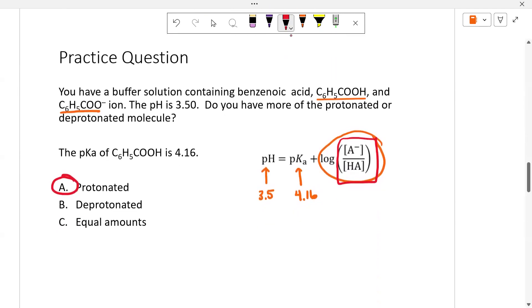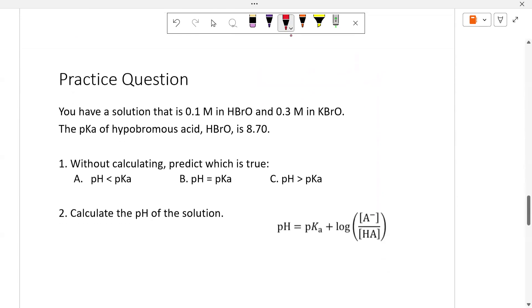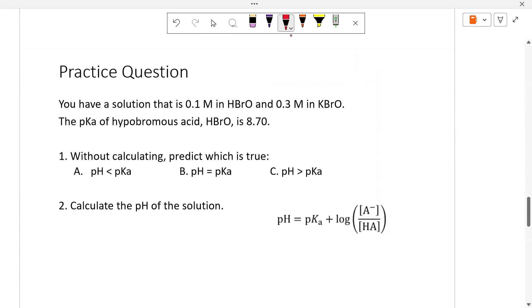So scrolling back down here, let's take another look. You have a solution that is 0.1 molar in our weak acid, 0.3 molar. This is our basic salt, but there's our conjugate base. It's the only part we care about. Potassium would be a spectator ion. And we want to know what's true. So let's look at that. So now I know pKa, 8.7, that was given.